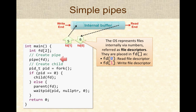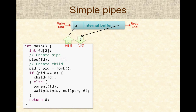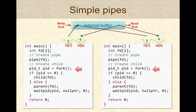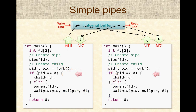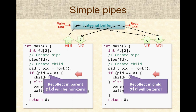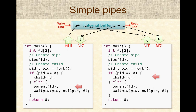So fd[0] has the read file descriptor and fd[1] has the write file descriptor. In the next step, the program calls the fork system call, duplicating itself into an identical child process. Since the child is identical, it will also have the same file descriptors associated with the pipe, so both the parent and child now have information about the pipe the parent created. As part of the fork system call, the parent has the actual PID of the child process, while in the child the PID will be zero, causing the processes to take slightly different execution paths.